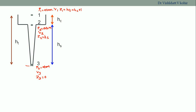Let's apply the continuity equation at points one and two. According to the continuity equation, the total quantity flowing through the system should be equal, that is Q equals a1·v1, which equals a2·v2.